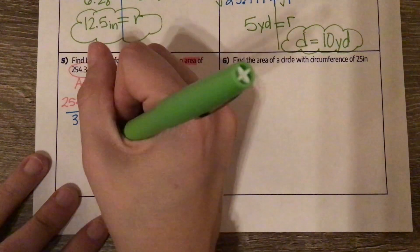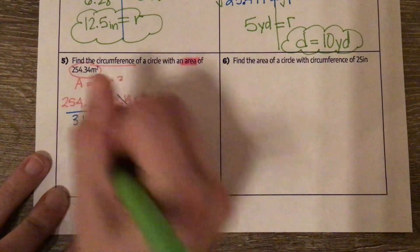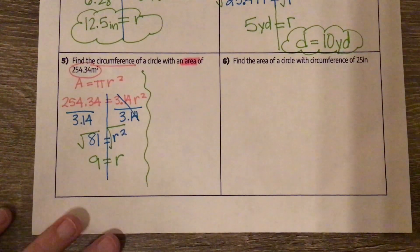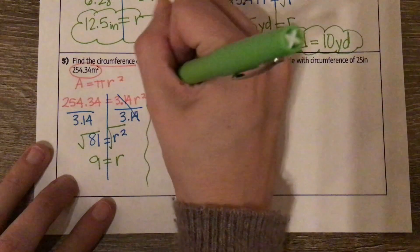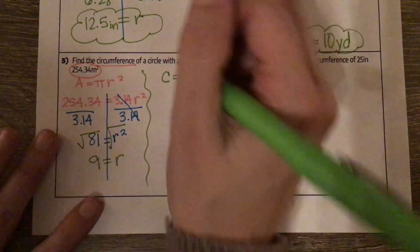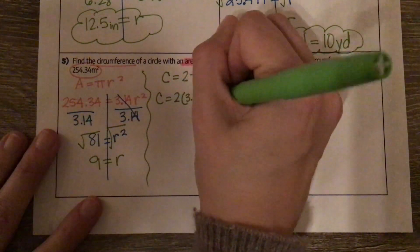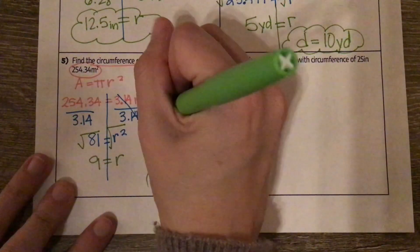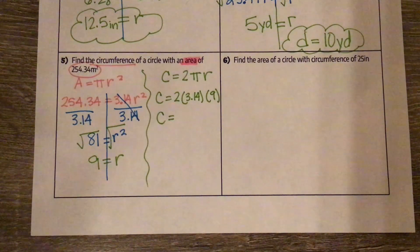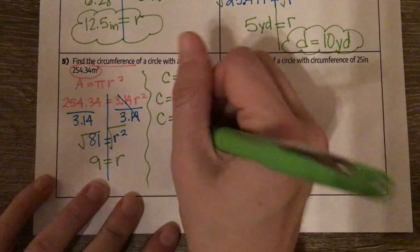R is being squared, so the opposite is to square root. The square root of 81 is 9. Now we're going to plug this back in to find the circumference using the formula: circumference equals 2πr. Our circumference equals 2 times 3.14 times our radius of 9. So 2 times 3.14 times 9 gives us 56.52 meters.